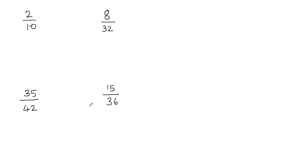What do we mean by greatest common factor? The greatest common factor is the largest number that can divide evenly into two other numbers. For example, the greatest common factor of 2 and 10 will be 2, because 2 is the largest number that can divide into both 2 and 10. So we will divide the numerator as well as the denominator by our greatest common factor.